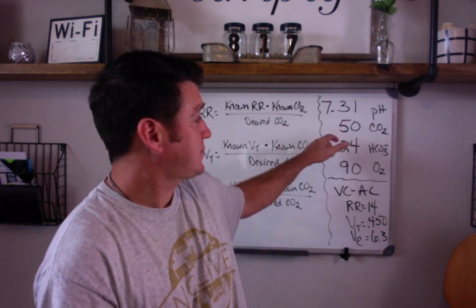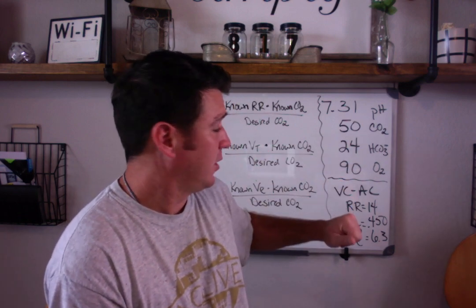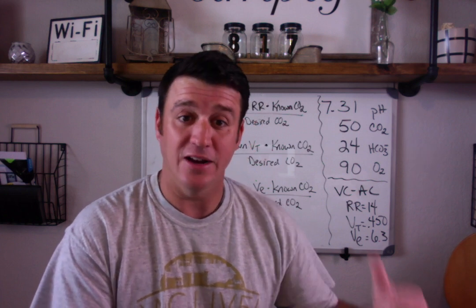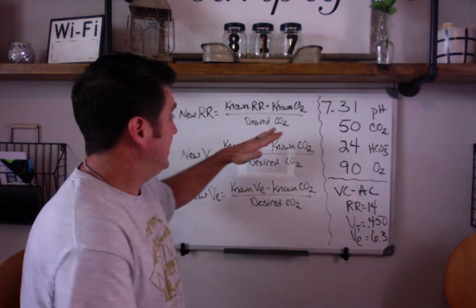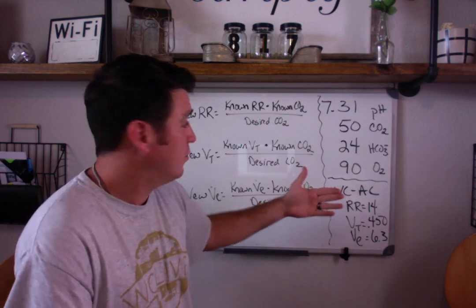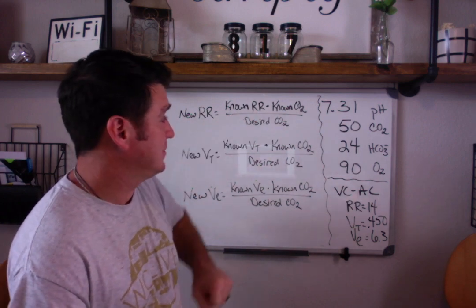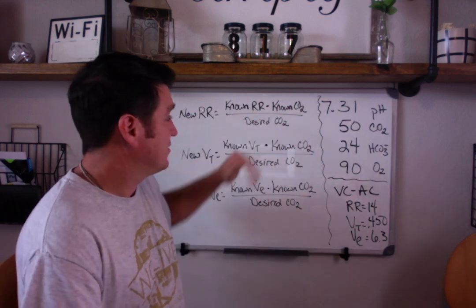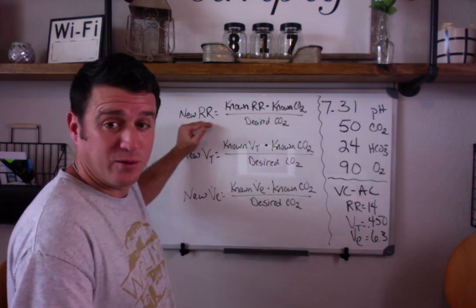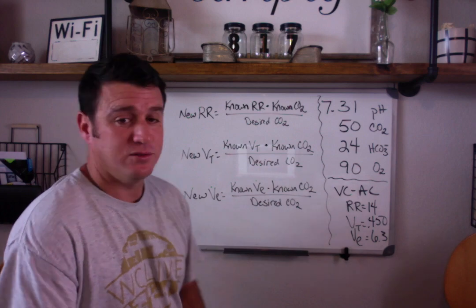We need to get that patient's CO2 down. To do that, we can either increase respiratory rate or increase tidal volume, and there are formulas to tell you exactly what to increase them to. If you know your patient's respiratory rate, their known CO2, and you want to change it to a desired CO2, you set the formula up like this: known rate multiplied by known CO2, divided by desired CO2. That will give you a new respiratory rate that should achieve your target CO2, assuming nothing else changes.